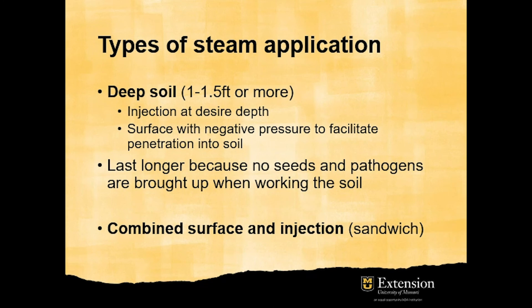The other type is deep soil steaming, which penetrates to 1 to 1.5 feet depending on the equipment. It's done by injection at the desired depth or by surface application with negative pressure from a drainage pipe to facilitate penetration into the soil. It lasts longer because no seeds and pathogens are brought up when working the soil. The last method is a combination between surface and injection, like a sandwich.